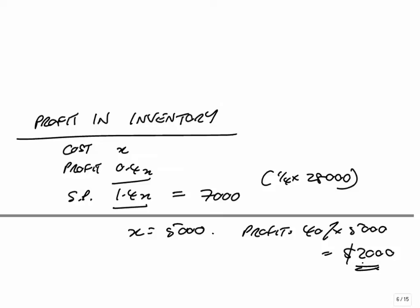A quarter of the goods — so £7,000 at selling price — are still in inventory. The profit there is £2,000. It does tell us the total sales from S to P were £28,000, but one quarter of them was still in inventory. The rest were sold outside, so the profit on those has been made. We're only worried about those that are still left that haven't been sold.